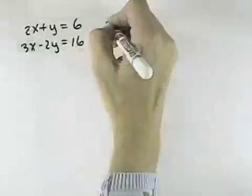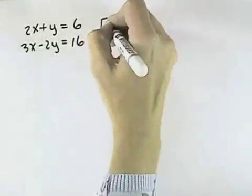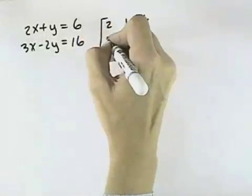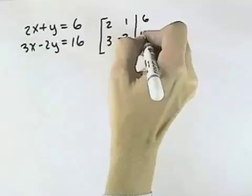We want to solve the system using matrices, which means first we need to set up our matrix with the coefficient in front of x, the coefficient in front of y, and the constant on the other side of the equation. We do the same thing for the second row.